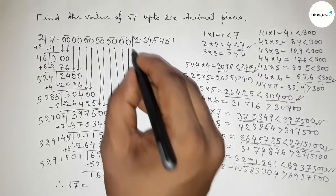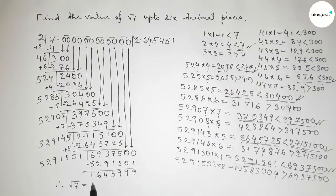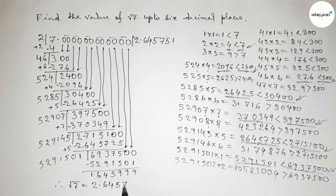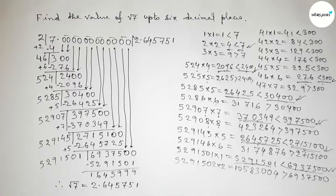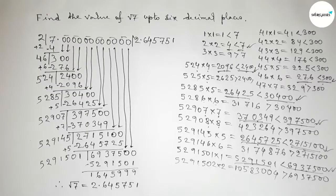Therefore, the value of root 7 up to 6 decimal places is √7 = 2.645751. That's all — thanks for watching. If this video is helpful to you, please share it with your friends. Thanks for watching.